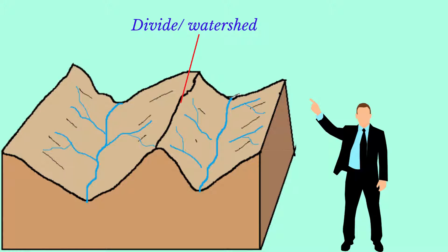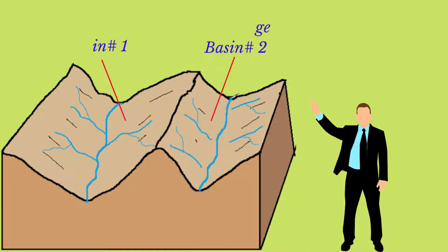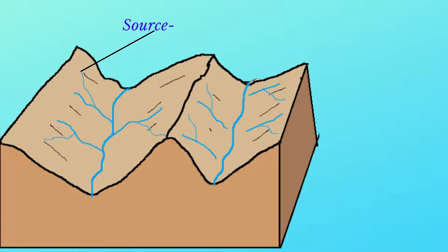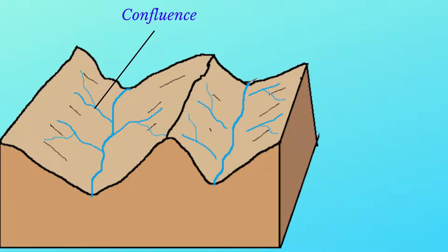The drainage basin is separated from other drainage basins by a highland called a watershed or a divide. Notice how the watershed or divide separates drainage basin number one and drainage basin number two. The point at which a river begins within the basin is called the source of the river. A smaller stream which flows into a larger stream is known as a tributary. The point at which two streams meet is called a confluence.